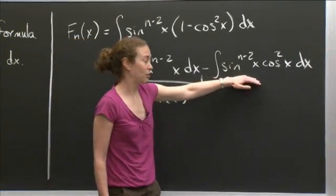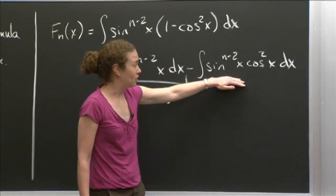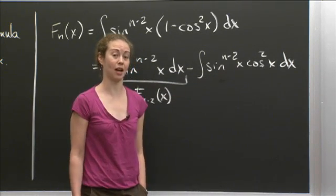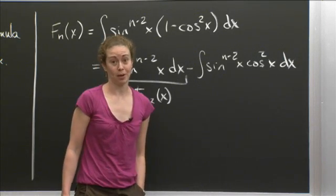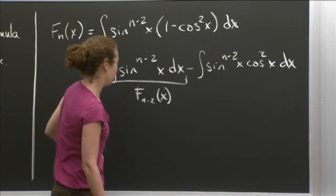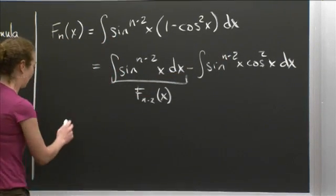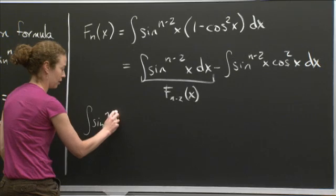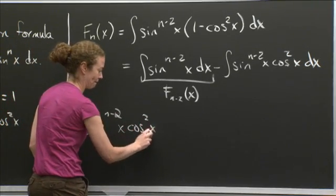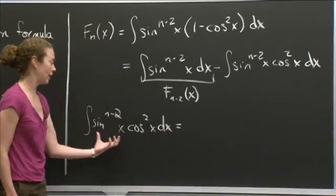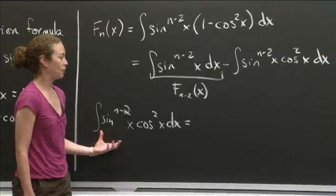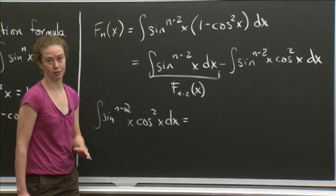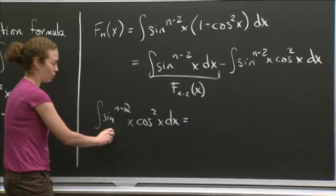The second piece — the integral of sine to the n minus 2 x cosine squared x dx — we can't write directly in terms of capital F with some subscript, and it doesn't look easy to integrate right away. Let's think about how we could split this thing up. The goal is to use an integration by parts: either manipulate it so it looks like a capital F function, or manipulate it so the integral sign is gone.